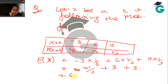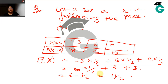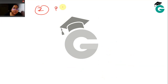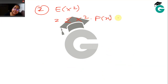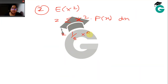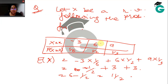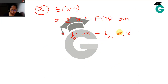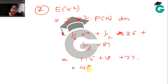So E[X] = 6 − 1/2 = 11/2. The next part asks for E[X²], which is the summation of x² · f(x): (1/6)(9) + (1/2)(36) + (1/3)(81) = 1.5 + 18 + 27 = 46.5.